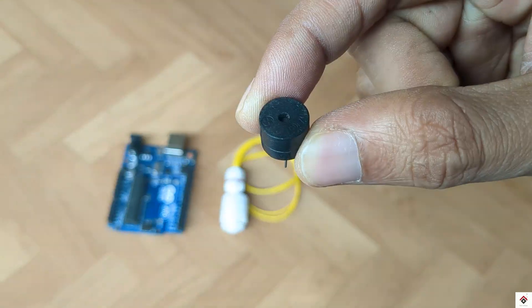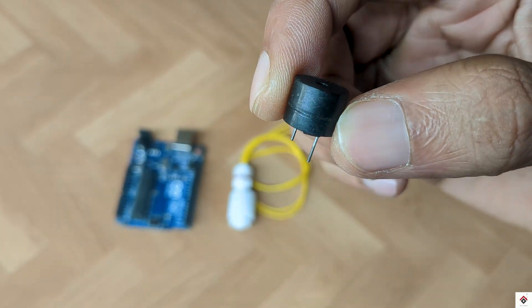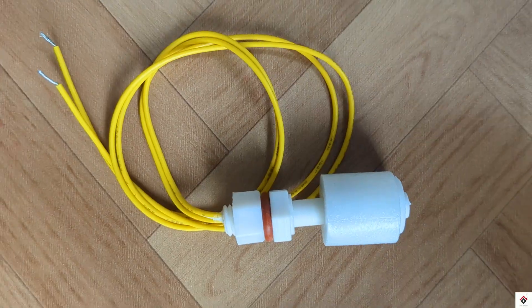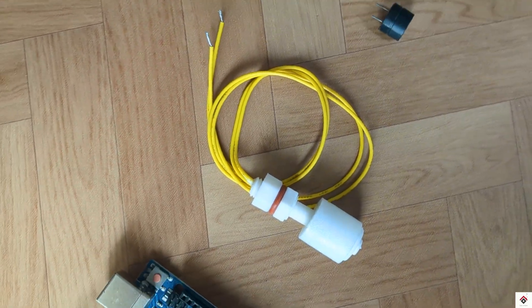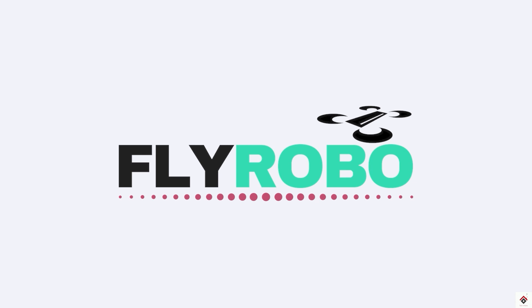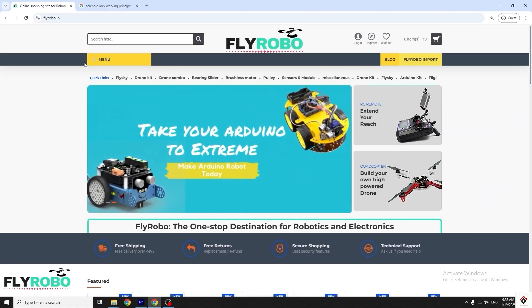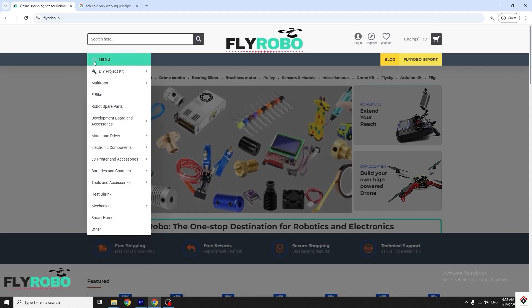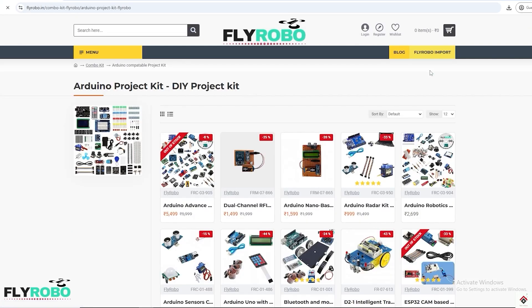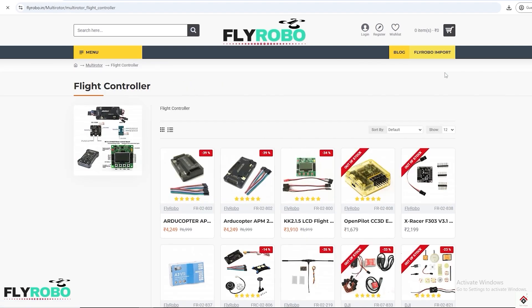and a small buzzer. I purchased all these project components from flyrobo.in. They have a very huge collection of components, and the prices are also reasonable compared to other platforms. Make sure you explore the products. I'll leave the link in the description box.